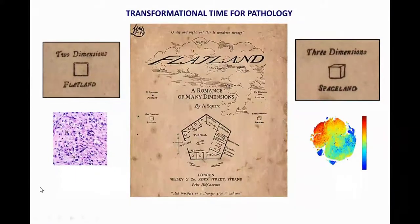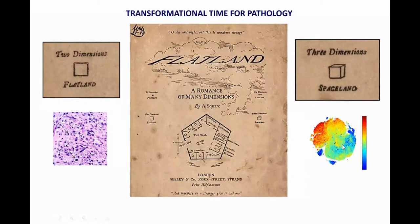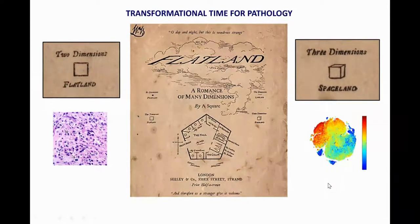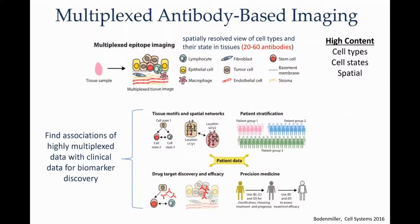This is pretty much a transformational moment for pathology, where we're going from flatland — a two-dimensional world of H&E and IHC — into spaceland, a higher dimensional world where we extract features we haven't been able to before. The assays poised to do that are multiplexed antibody-based imaging tools, where we image 20 to 60 antibodies on a single slide, deriving high-content information that allows us to define cell types, their states, and their spatial arrangements — identifying fibroblasts, lymphocytes, tumor cells, blood vessel proximity, DNA damage, proliferation, and other phenotypic markers.